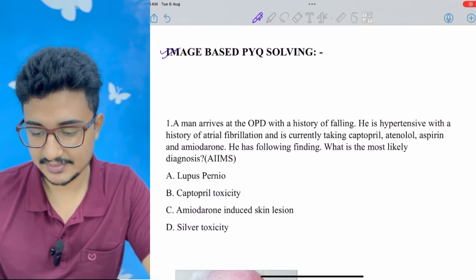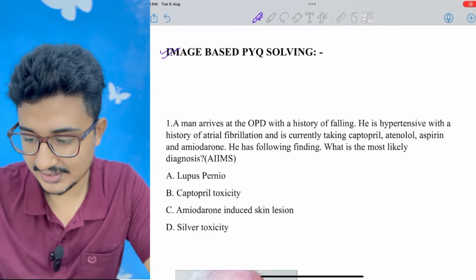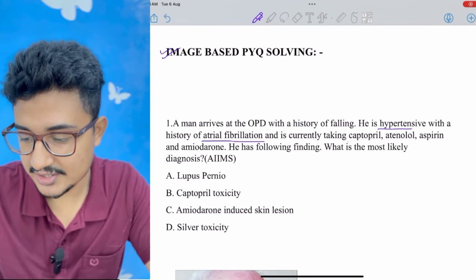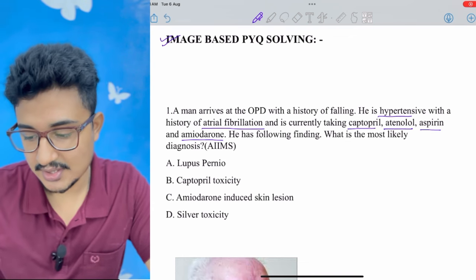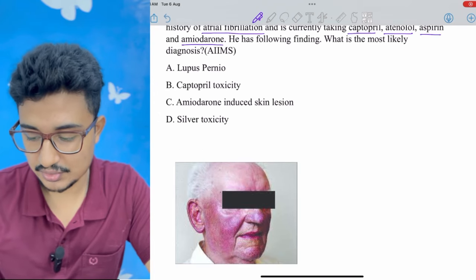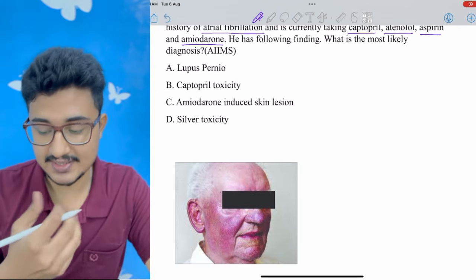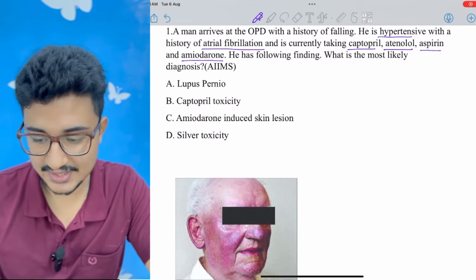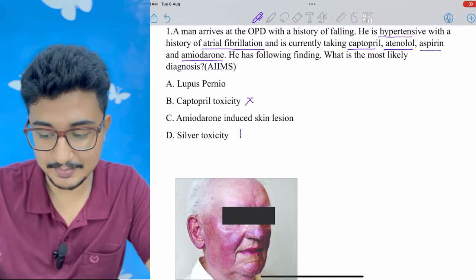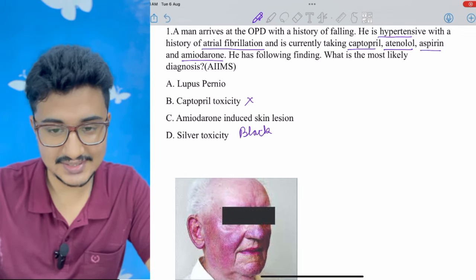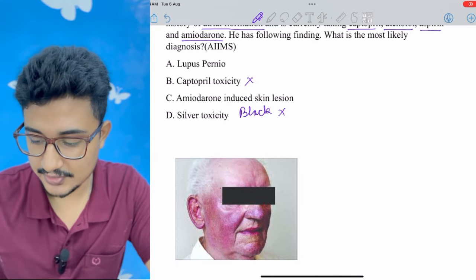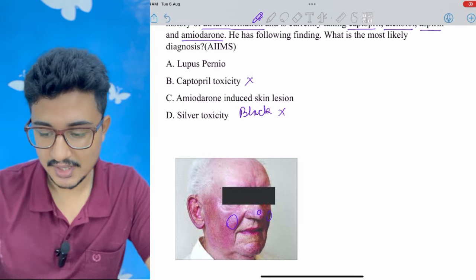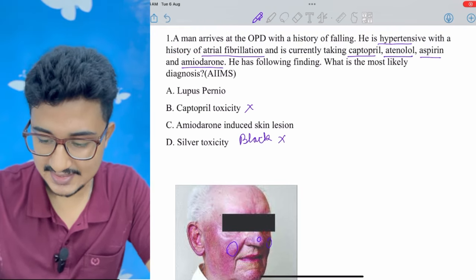Question 1: A man arrives at OPD with a history of fall. He is hypertensive, has a history of atrial fibrillation, and is on captopril, atenolol, aspirin, and amiodarone. He has pigmentation on the center of the face, malar regions, and near the mandible. Captopril toxicity doesn't cause pigmentation; silver toxicity is black and unlikely; lupus is specifically malar. The patient is on amiodarone, which causes pigmentation — so the answer is amiodarone-induced skin lesions.